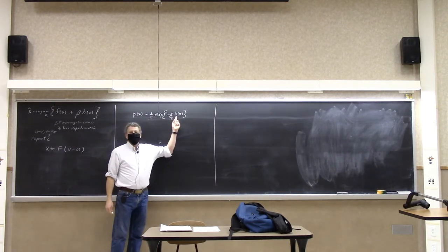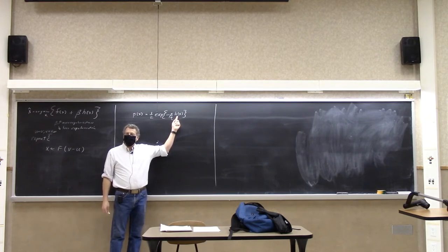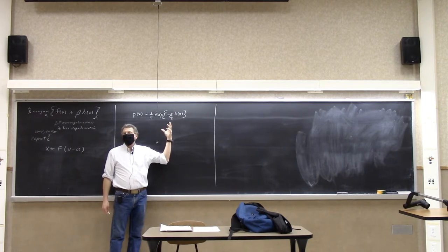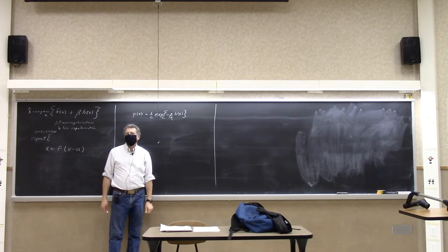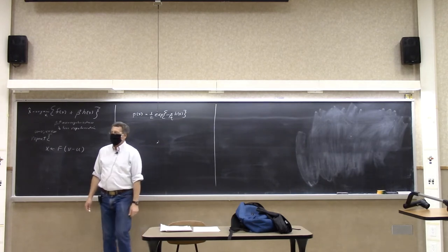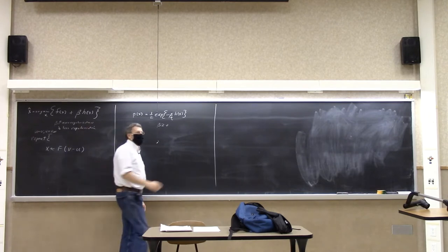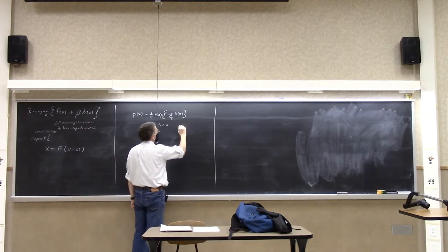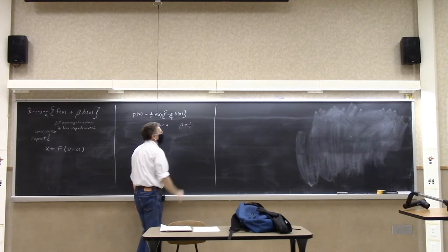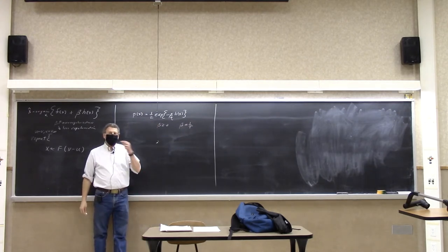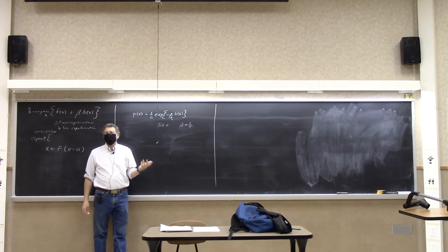And this is a parameter that controls the distribution. If beta is larger, the distribution is peaked more around the maximum of h. If beta is smaller — if beta is 0 — then it's uniformly distributed over the space. Beta is a positive number. Later we'll see that beta here is analogous to 1 over temperature, where temperature is thermodynamic temperature — the temperature you measure outside in the morning.